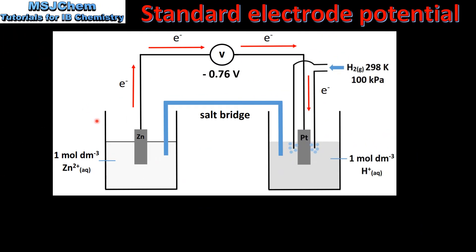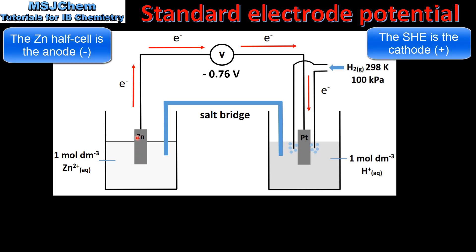Let's look at an example. On the left we have a zinc half cell which is composed of a zinc electrode in a 1 mole per decimeter cubed solution of zinc 2+ ions. The zinc half cell is connected by a wire and a salt bridge to the standard hydrogen electrode on the right. We also have a voltmeter in the circuit which measures the electrode potential of the zinc half cell. Because zinc is higher in the activity series than hydrogen, the electrons flow from the zinc half cell to the standard hydrogen electrode.